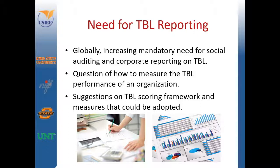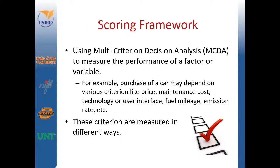Questions exist on how to measure triple bottom line performance of an organization. Suggestions on triple bottom line scoring framework and measures could be adopted. On the following screens, we will explore some of the scoring framework. Using multi-criterion decision analysis, or MCDA, to measure the performance of a factor or variable is one option for the scoring framework.